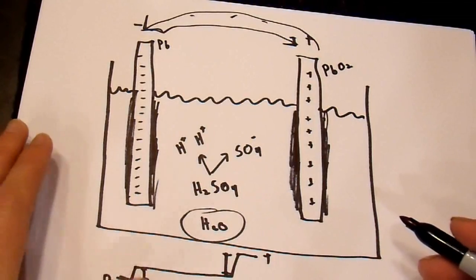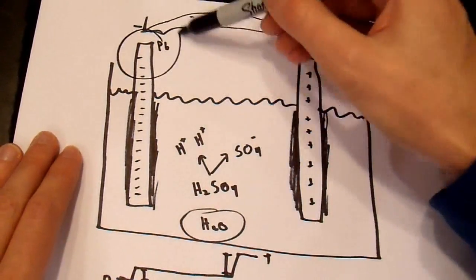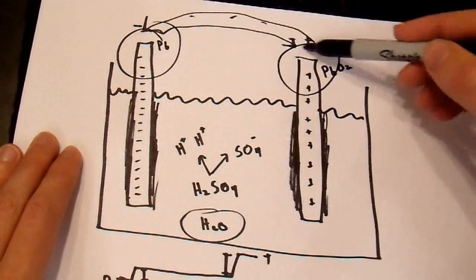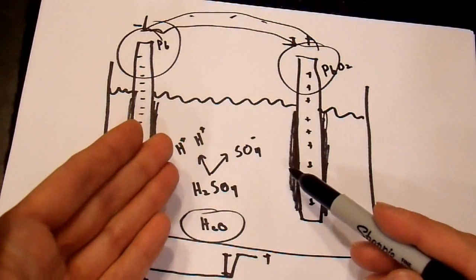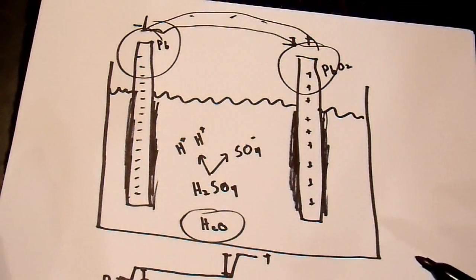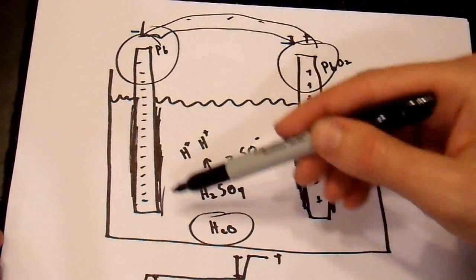the reason that these concepts are important is because the only way that current can move from this electrode to this electrode, or vice versa, is to have chemical reactions happen inside this electrolyte. And, that's really the basis of Pukert's Law. These chemical reactions take time.